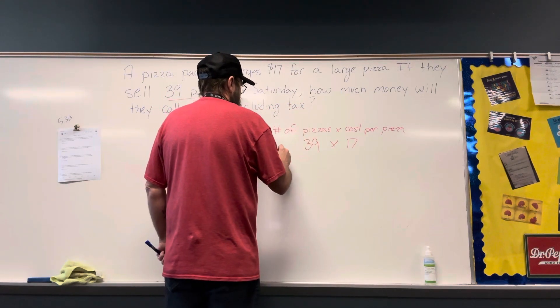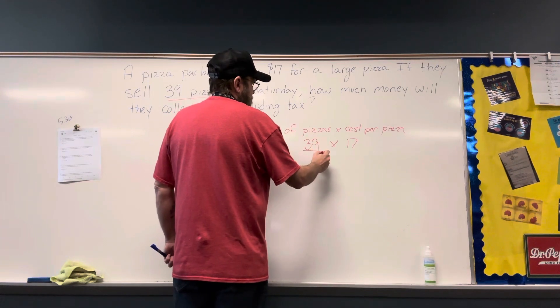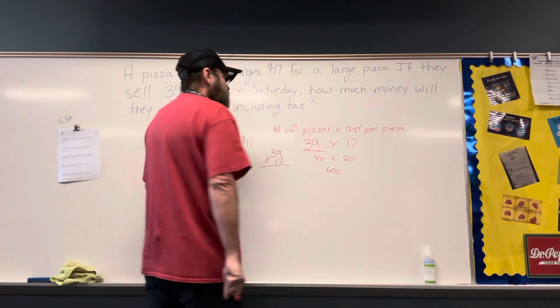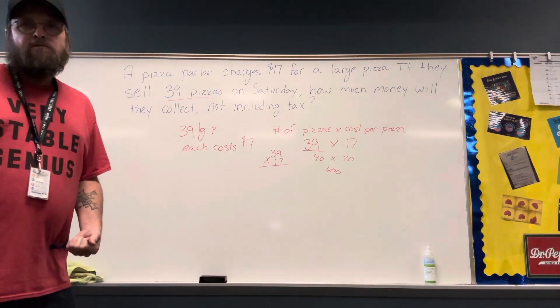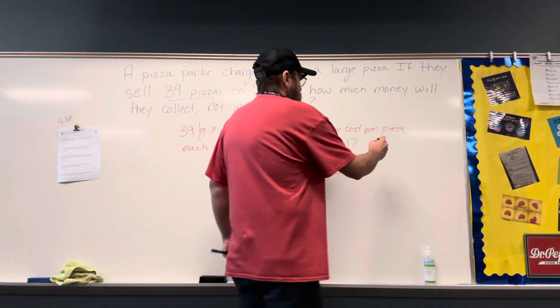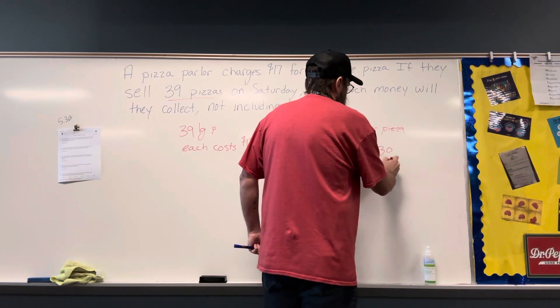So if we get 39 times 17, we estimate I get 40 times 20 and that would be $600. Now I rounded both of those up, so my answer is obviously going to be less than $600.